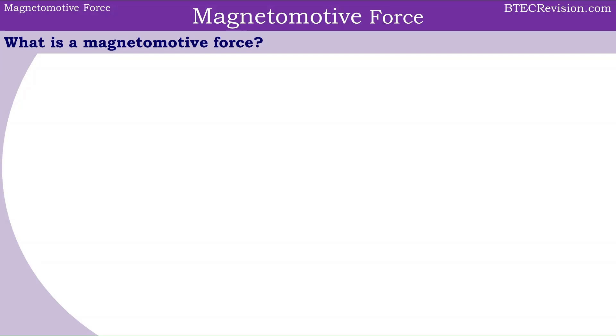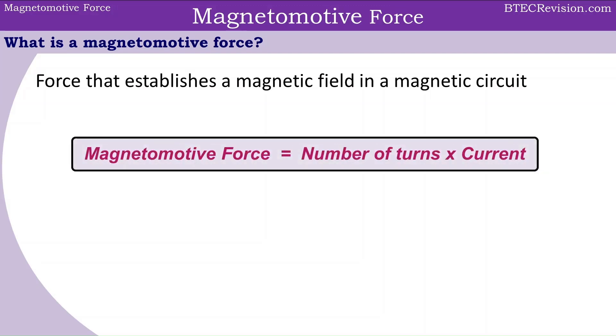What is a magnetomotive force? It is a force that establishes a magnetic field in a magnetic circuit and can be calculated with this equation. Magnetomotive force equals the number of turns times the current, and the short form is Fm equals NI.